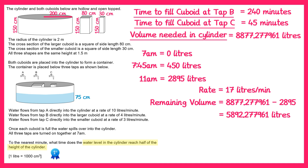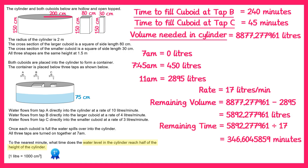All we need to do is divide that remaining volume by the rate of 17 litres per minute to find the remaining time, which is 346.6 minutes. Rounding to the nearest minute gives 347 minutes, which is 5 hours and 47 minutes. Adding 5 hours 47 minutes onto 11am takes you to 4:47pm, which is the answer to the question.